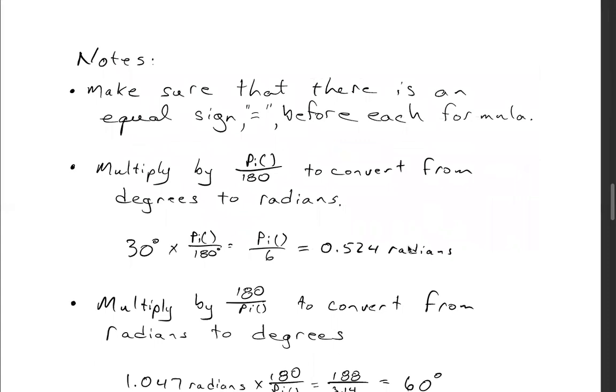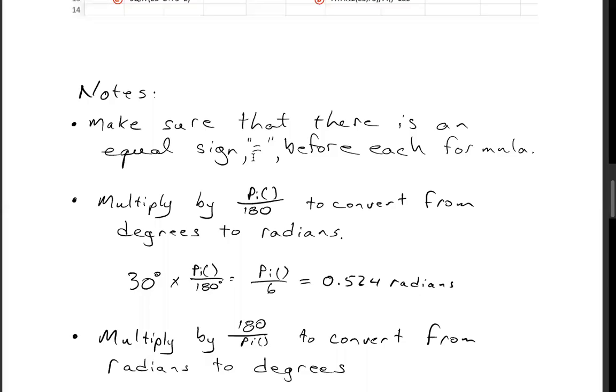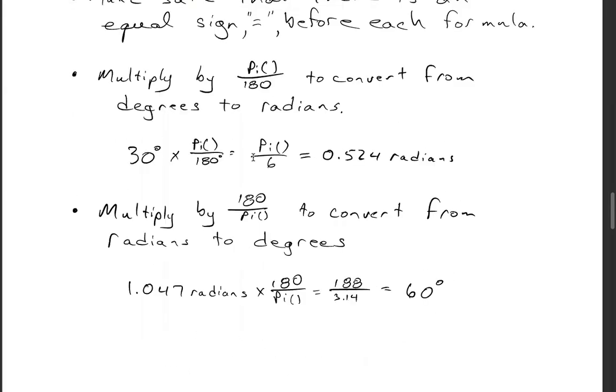Let's put some notes. Make sure that there's an equal sign before each formula. Multiply by pi over 180 to convert from degrees to radians. 30 degrees times pi over 180 equals pi over 6, which equals 0.524 radians.